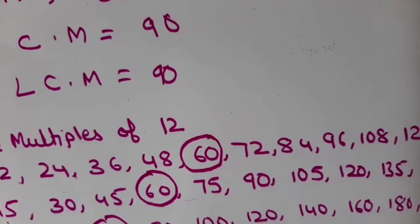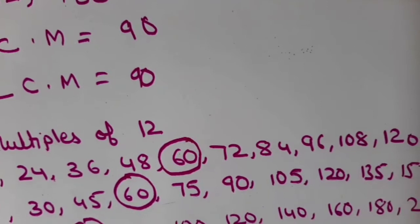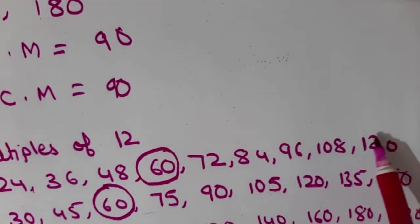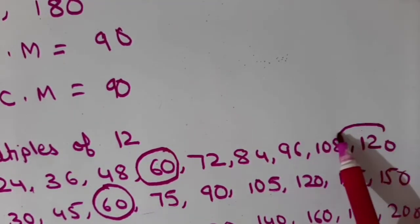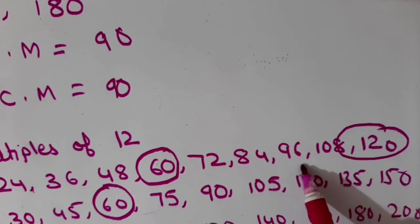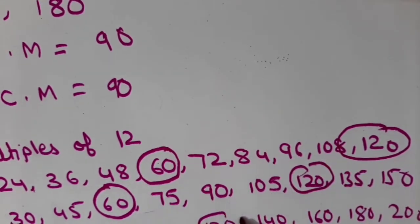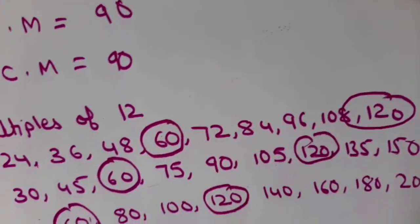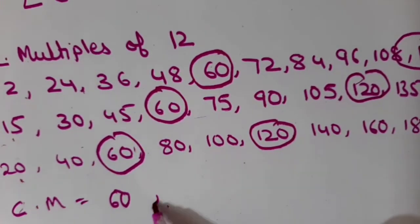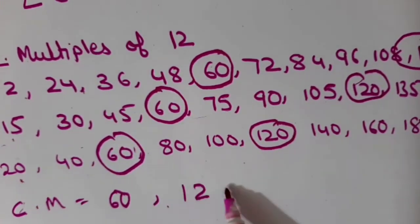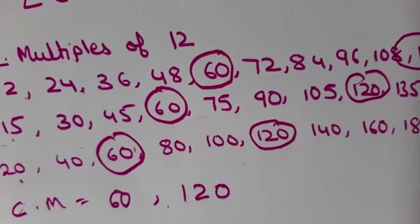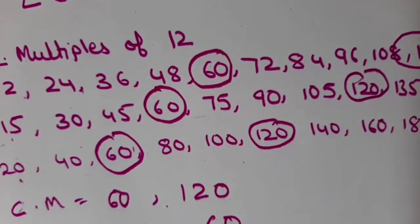The second common multiple is 120 — 120 is also there in all three. So LCM will be the least amongst these two, that is 60. So LCM is 60.